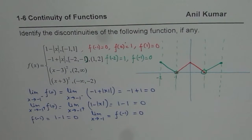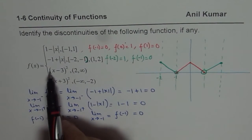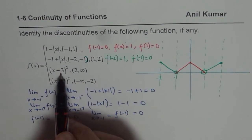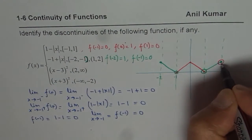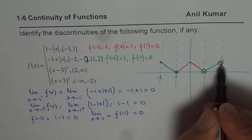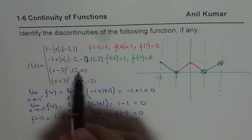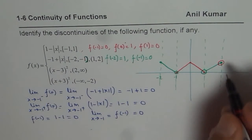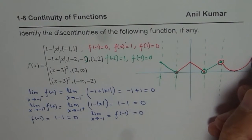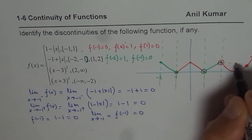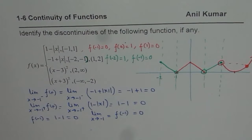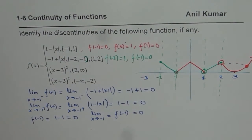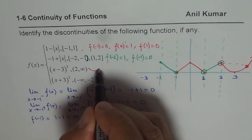Now let's look at the parabola from 2 to infinity, which is x minus 3 whole square. At x equals 2, we get 2 minus 3 squared, which is minus 1 squared, equaling 1. Since x equals 2 is not included, I put an open hole, but it maps with the filled end circle of the previous piece. At x equals 3, the value is 0; at x equals 4, the value is 1. So we get a parabola opening upward with vertex at x equals 3.